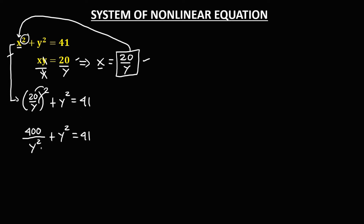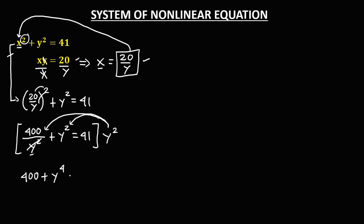To eliminate the denominator, multiply the whole equation by y squared. Distributing to every term: y squared times 400 over y squared cancels to give 400, plus y squared times y squared gives y to the power 4, equals 41y squared.